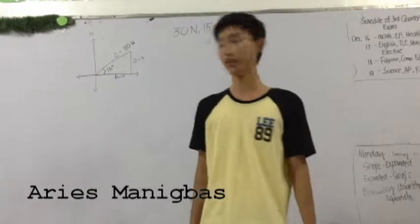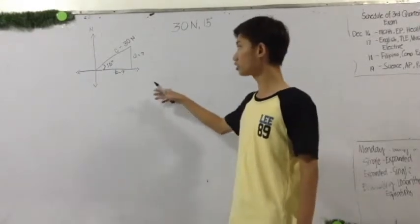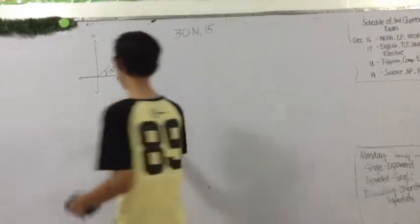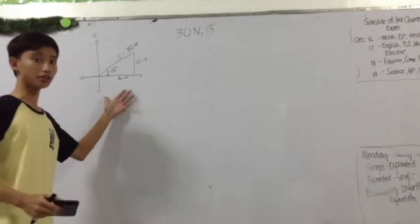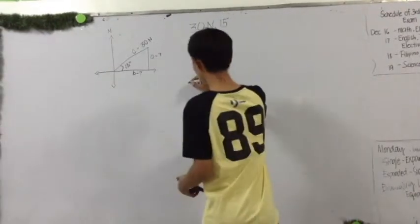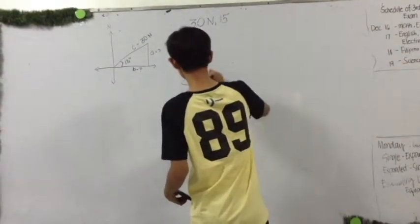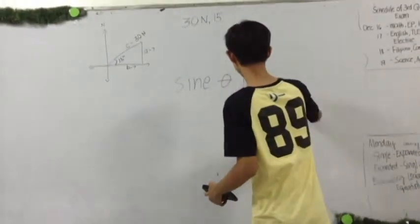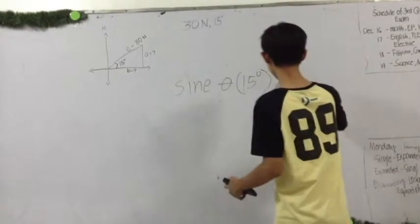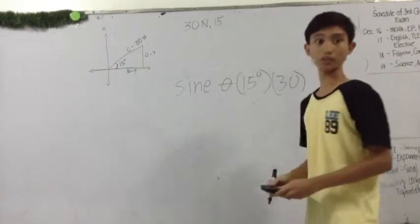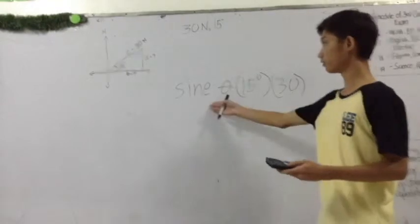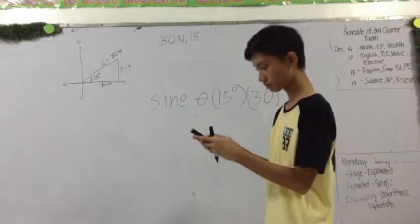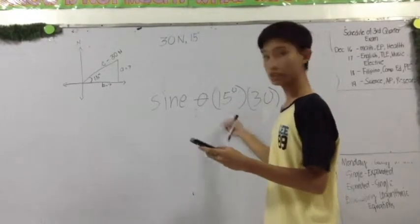Hi! I'm Arseneid Bass. I'm here today to teach you how to solve a problem using vector resolution. As you can see in this illustration, A and B are missing. To solve for A, we use sine. Using your calculator, press sine, then enter 15 degrees. We get 0.23.